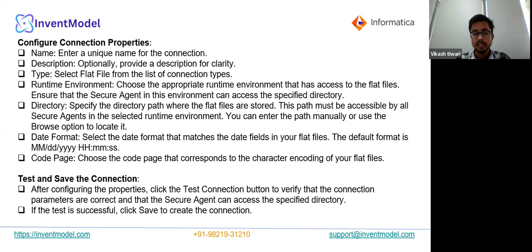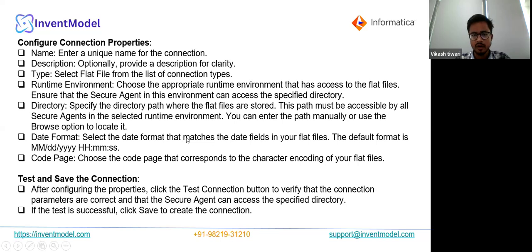If the secure agents cannot find the specified directory, it will create an error. You can enter the path manually — for example, the C directory or whatever directory you have — or use the Browse option to locate it. For Date Format, you can choose any format to match the data fields in your flat files; the default format is MM/DD/YYYY and HH/MM/SS for hours, minutes, and seconds. For Code Page, choose the code page that corresponds to the character encoding of your flat files — meaning what type of data types are included in the file.